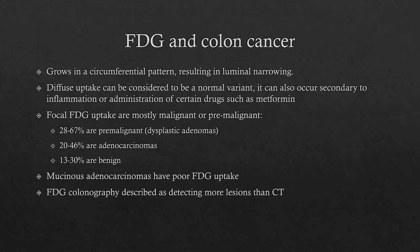In colon cancer, diffuse uptake in the bowel loops can be considered a normal variant. It can also be seen from inflammation, peristalsis, and from certain medications such as metformin in diabetic patients. If you see focal uptake, this is mostly malignant or pre-malignant, though a few are benign. Some types of colon cancer, such as mucinous adenocarcinomas, have poor avidity for FDG. FDG colonography has been described as detecting more lesions than CT.